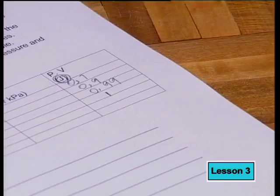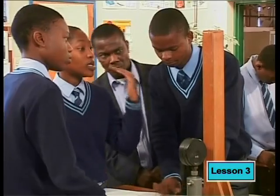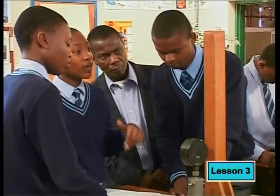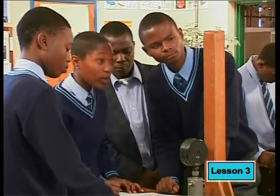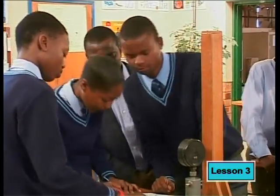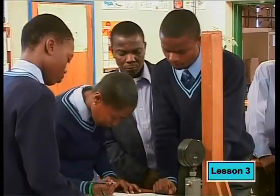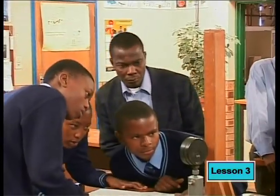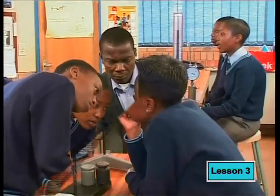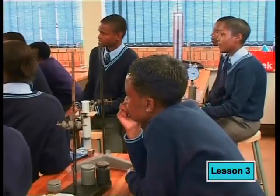The different answers could merely be due to experimental error or inaccurate readings. To be sure about whether or not there is, in fact, an inversely proportional relationship between pressure and volume, let's watch as Mr. Mashapa draws a graph of P against V. Now, let us plot the graph of volume against pressure.